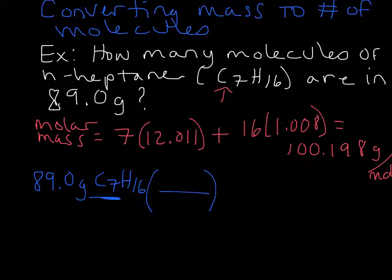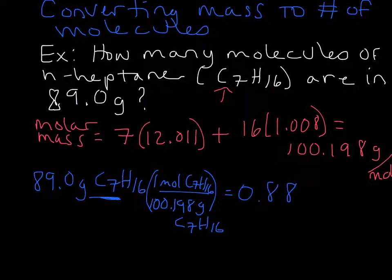So we have grams on top right here. We're going to take our molar mass, and that's going to be on the bottom down here, because we need to cancel out those grams to go to moles. 100.198 grams of C7H16 in one mole. And so let's go ahead and do the math on this. So we're going to take 89, and we're going to divide it by the molar mass, and we're going to end up with 0.888 moles. Actually, 0.8889 moles.